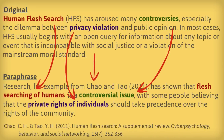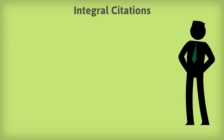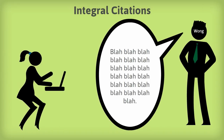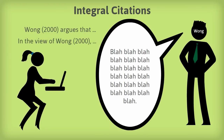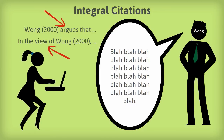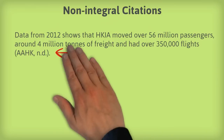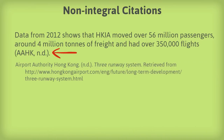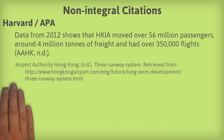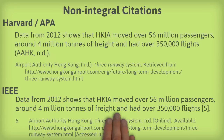So far, we've looked at integral citations — a citation that is part of a sentence. We often use integral citations when we want to highlight the author. With integral citations, you need to introduce it using a reporting verb such as "argue," or an introductory phrase such as "in the view of." However, if you want to highlight the information in a paragraph, then you can use a non-integral citation. As you can see in this example, the information is more important than the author, so author details are put in brackets at the end of the sentence. With APA or Harvard style, it's done this way, and with IEEE style, you just need the reference number in square brackets.